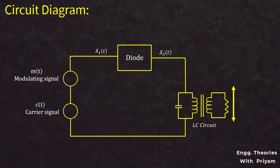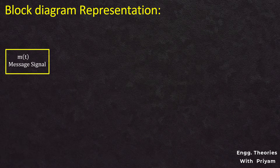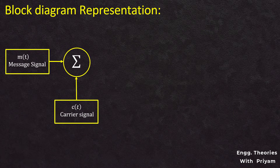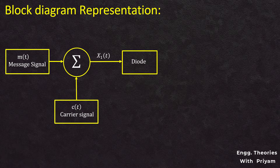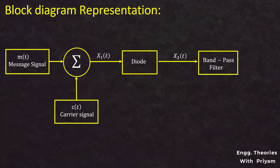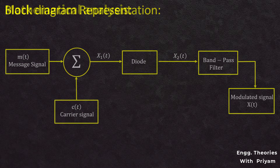Let's see the block diagram for the switching modulator circuit. First, the message signal and the carrier signal are given as input to a summer, which adds the two signals and generates the signal x1(t). The generated signal x1(t) is given as input to the diode, which works as an ideal switch. Then x2(t) is given as input to the bandpass filter, which eliminates the higher-order terms to generate the amplitude modulated signal.